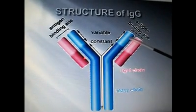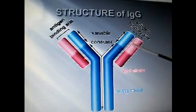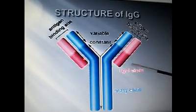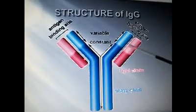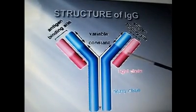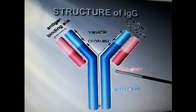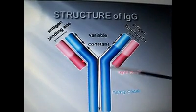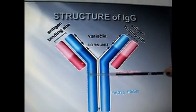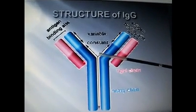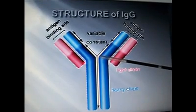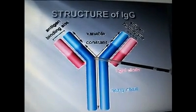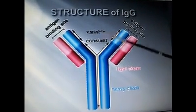The variable region is made up of one domain of the heavy chain and one domain of the light chain. We also have the constant region, which is the area below the variable region. We have the Fc region, which is the body part of the IgG. Here is where papain acts in the hinge region. Papain is an enzyme required to form Fab.